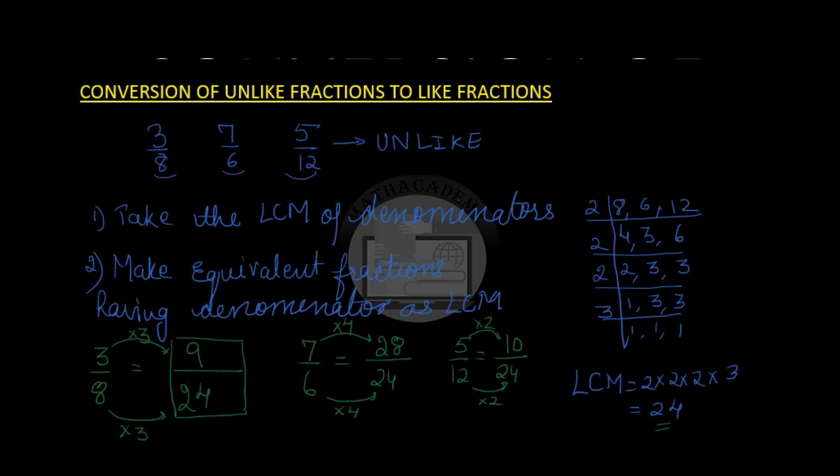So we have got three fractions which are equivalent to the fractions which are given in the question and which are unlike. So 3 by 8 is equal to 9 by 24, 7 by 6 is 28 by 24, and 5 by 12 is 10 by 24. And we see that all three of these equivalent fractions have the same denominator 24. And hence we have converted this unlike fraction into these like fractions.